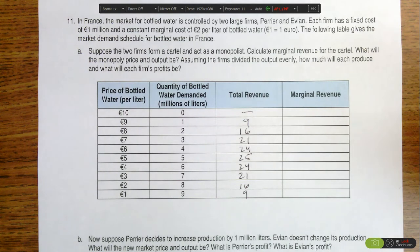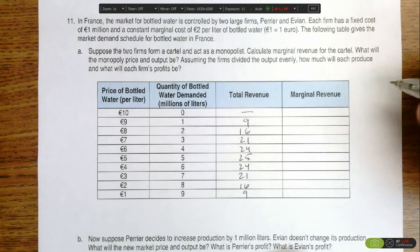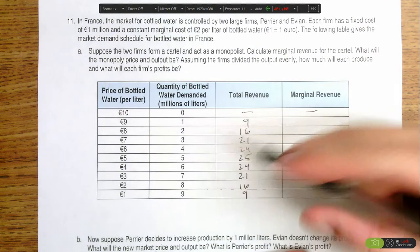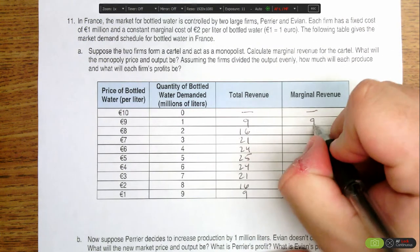Once you have total revenue, you just need to calculate marginal revenue, which is the change in revenue over the change in quantity. When you do that, you're going to get the following marginal revenues.